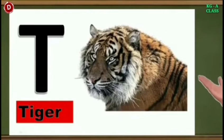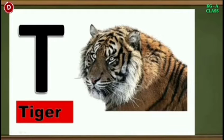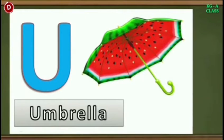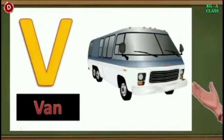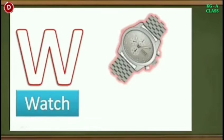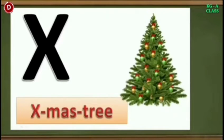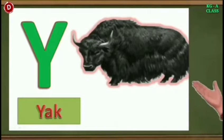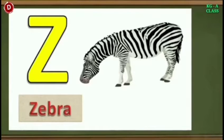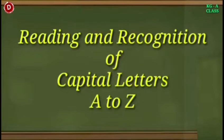Now comes T. This is capital T. T for tiger. Children, this is capital T, T for tiger. Now comes U. U for umbrella. The next letter is V. V for van. Now comes W. W for watch. Children, this is X. X for x-mas tree. Children, this is capital Y. Y for yard. And now comes the last letter. This is Z. Z for zebra. In this way, you have to learn to read and recognize capital letters A to Z with the help of pictures.